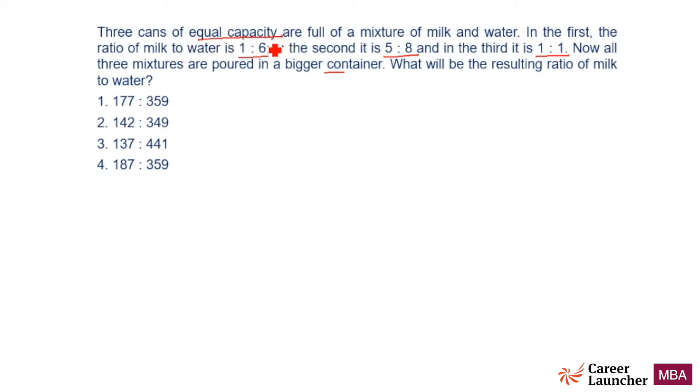Now, three cans of equal capacity. When we are talking about equal capacity, let us look at the numbers. Milk, water: 1 is to 6 in the first one, 5 is to 8 in the second one, 1 is to 1 in the third one.